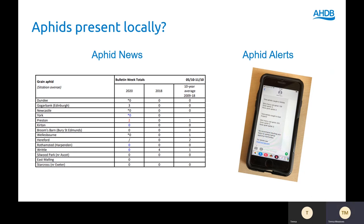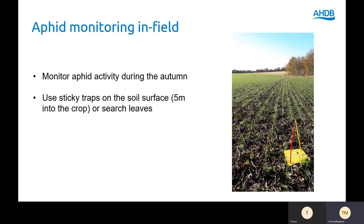You can also do your own aphid monitoring in field during the autumn or at key points during the year. The best way to do this is to use sticky traps on the soil surface about five metres into the crop, or by searching for aphids on leaves.